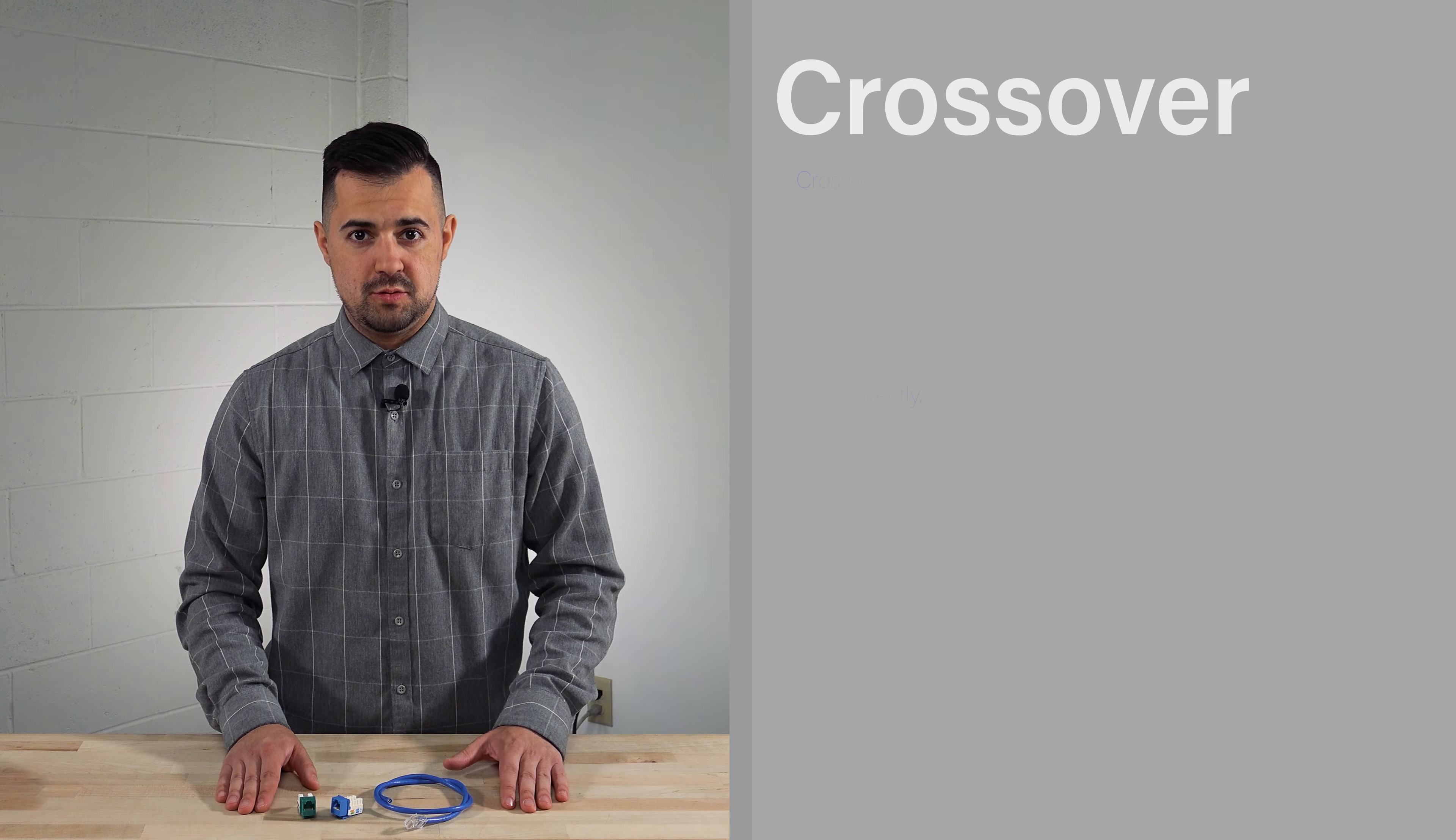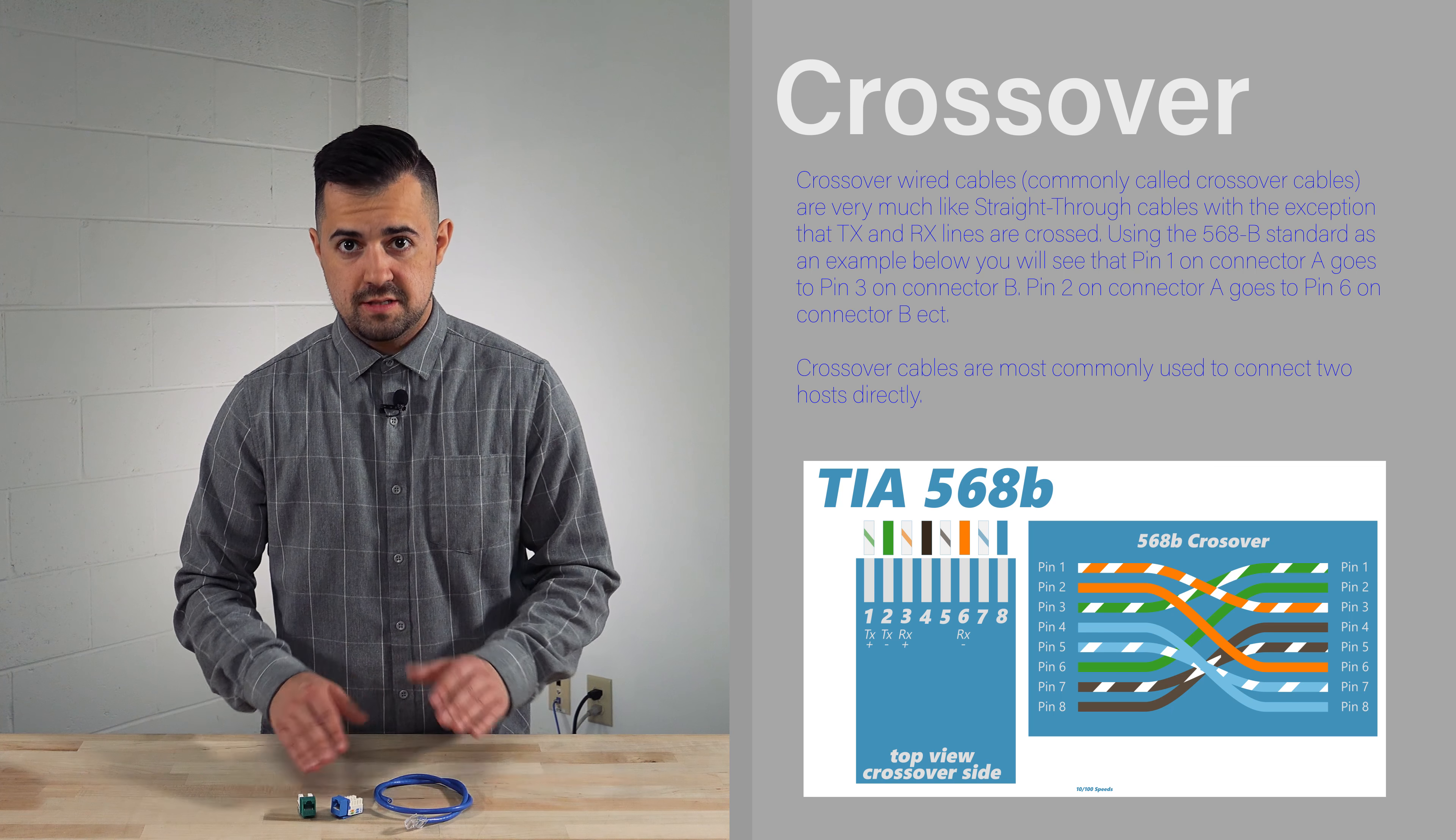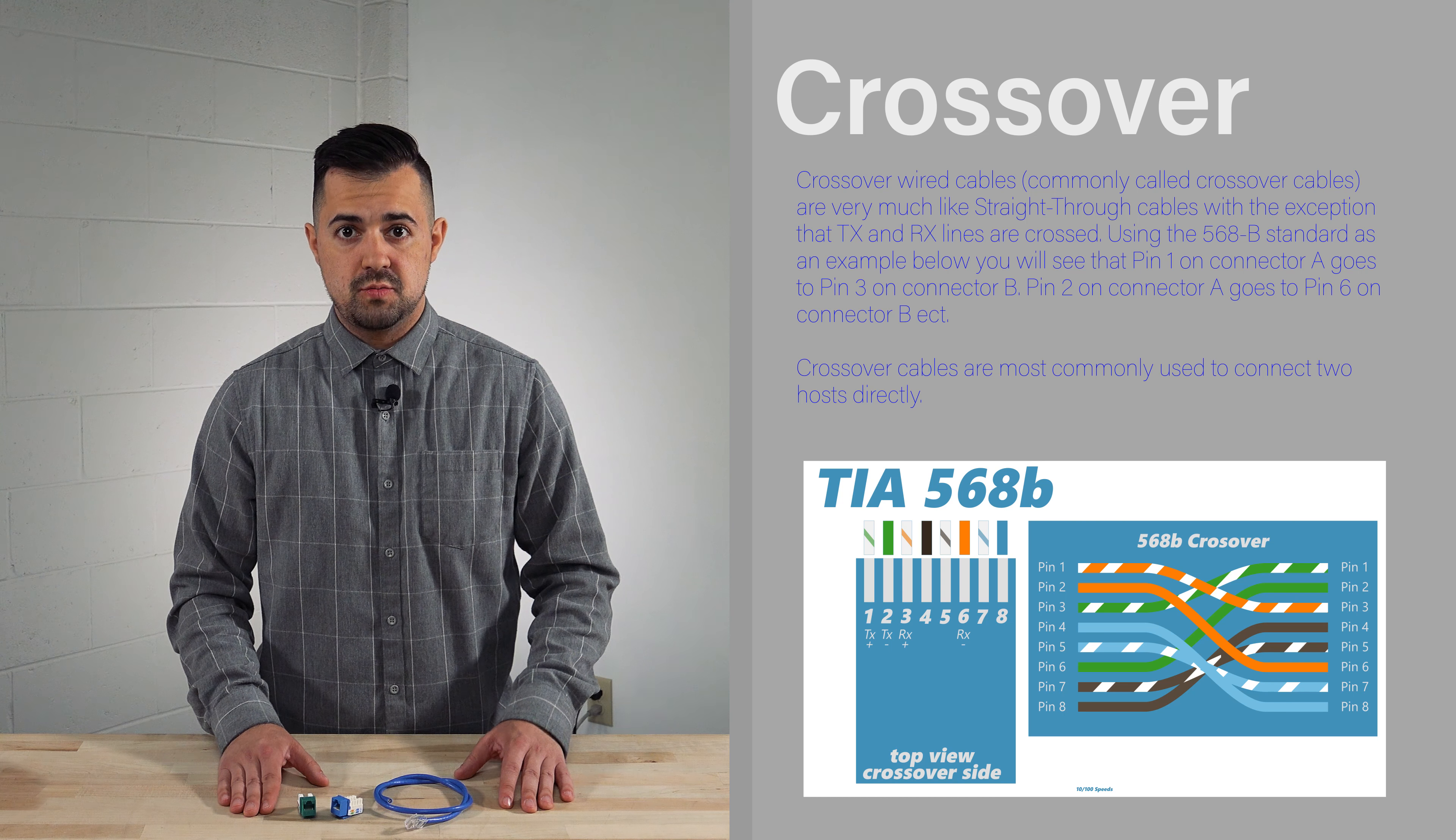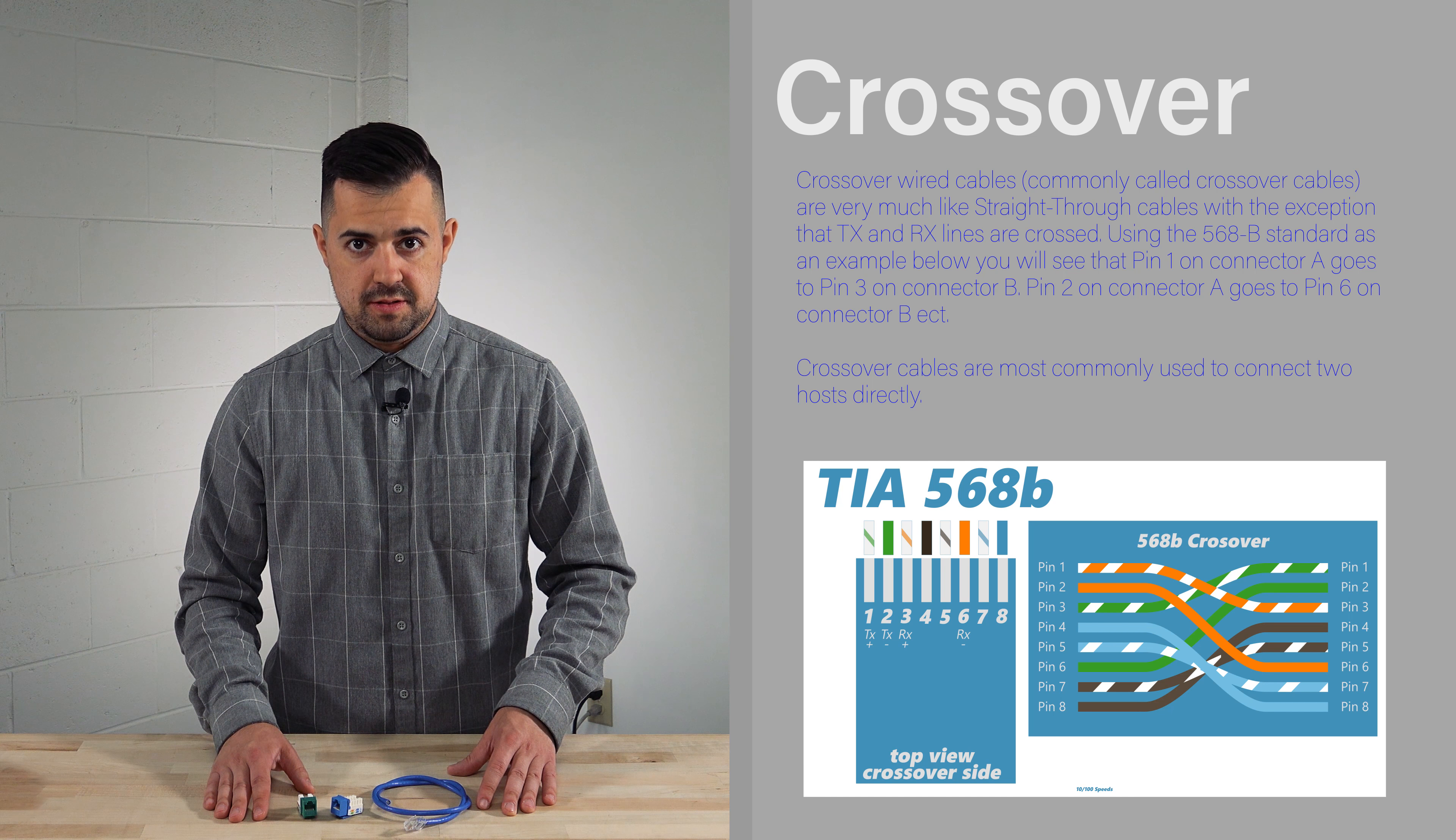However, a crossover cable will use 568A on one side and 568B on the other. Using two different pinouts on each end of the cable will cross the transmit and receive pins, so that when one device sends data, the other device will receive that data on the proper pins. Looking at this diagram, you'll see that each pair of transmit pins are crossed over to corresponding receiving pins on the opposite side.